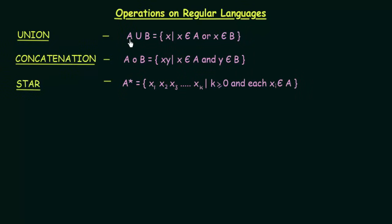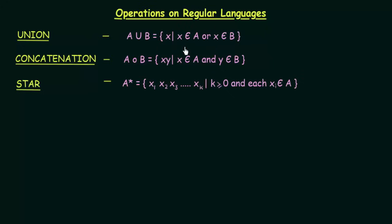Let's start with Union. The formal definition of Union is: A Union B equals the set of X such that X belongs to A or X belongs to B. This Union operation is exactly the same as the Union operation on sets. Suppose you have two language sets A and B — the Union of A and B means anything X that could either belong to set A or belong to set B.